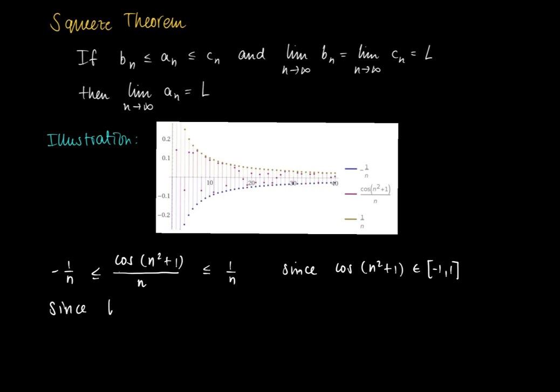Now look at the sequences 1 over n and minus 1 over n. It's not hard to see or to prove, do it yourself, that the limit of n to infinity minus 1 over n equals the limit of n to infinity 1 over n equals 0. So actually we have that the outside sequences, the sequence below and the sequence above, have the same limit. So the sequence in between must have also the same limit. So the limit of n to infinity of the cosine of n squared plus 1 divided by n equals 0.